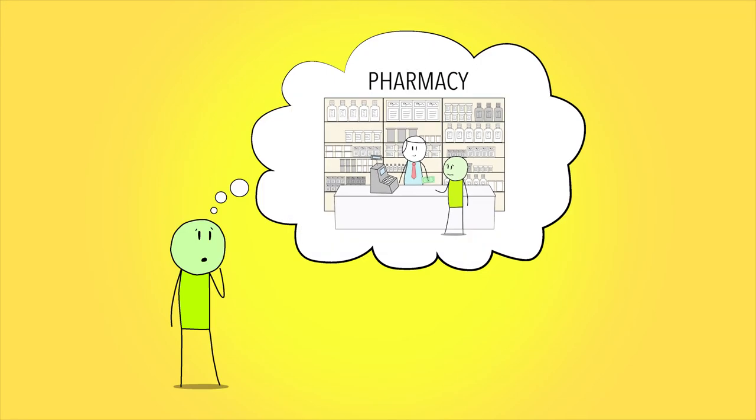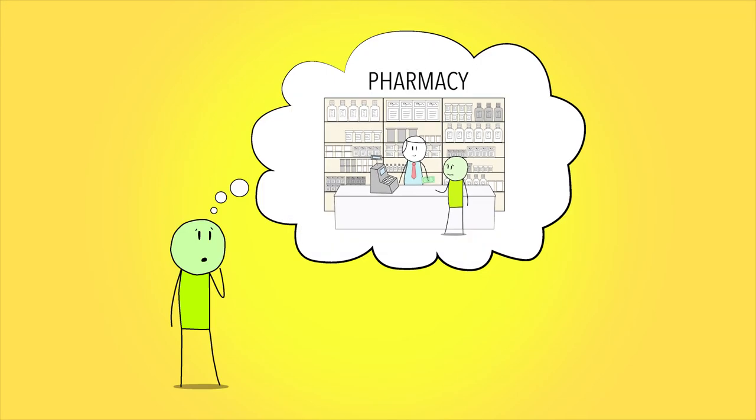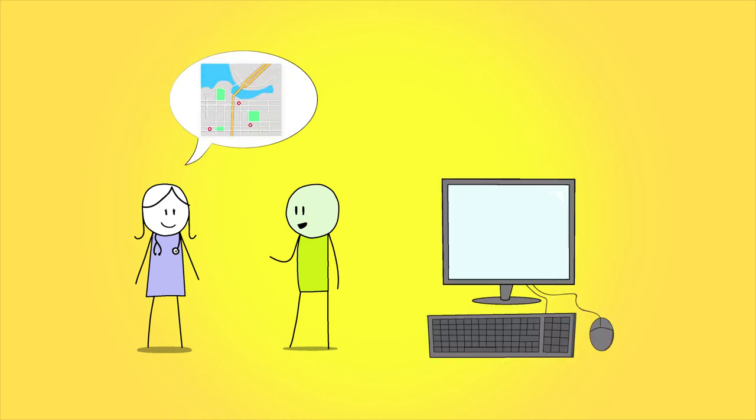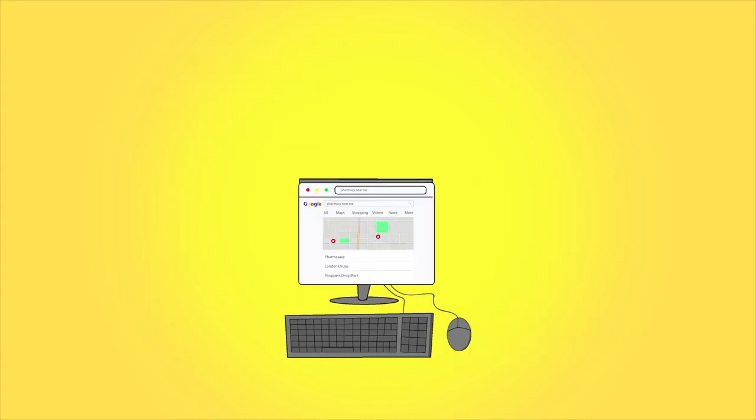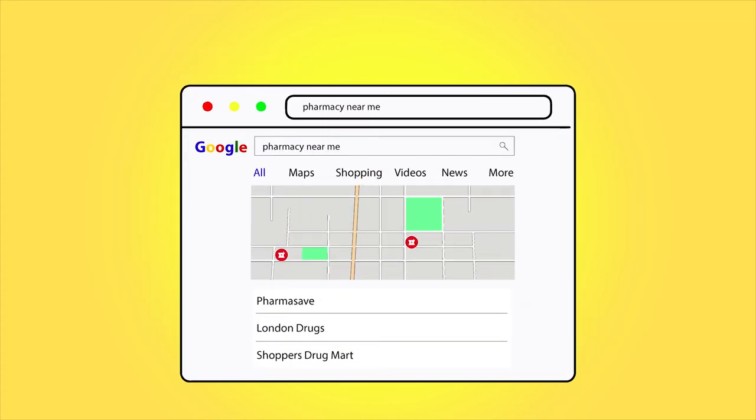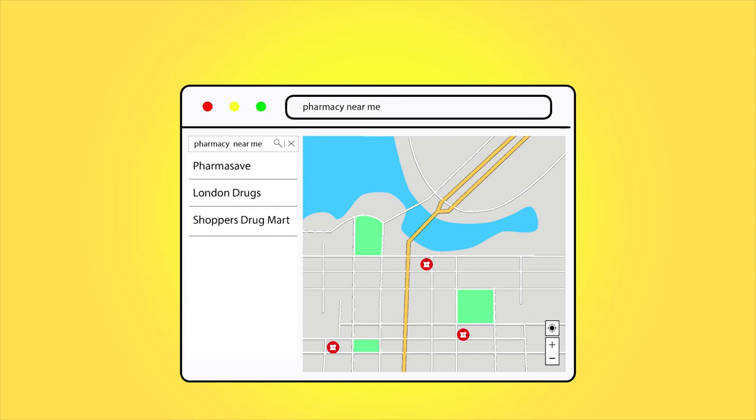Where can you find a pharmacy? You can find a pharmacy by asking your doctor or nurse practitioner. You can also find one by searching online. Go to google.ca and search pharmacy near me. Click on maps. You will see a map showing you all of the pharmacies near you.